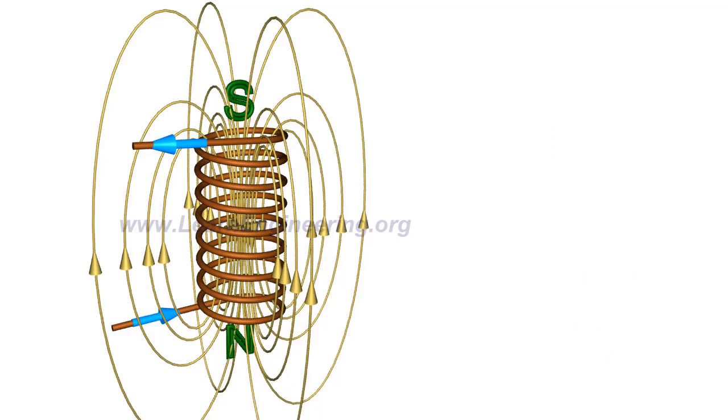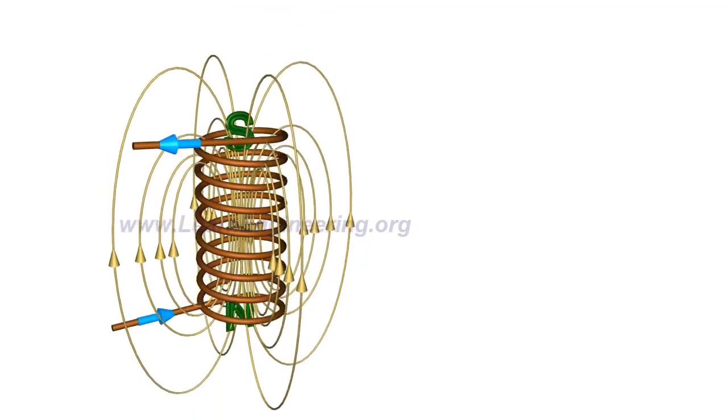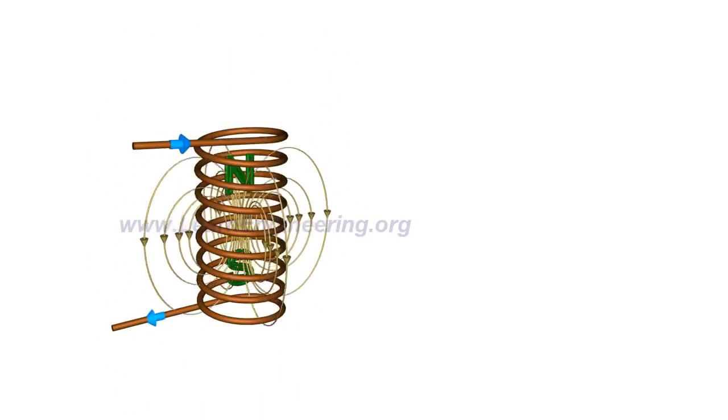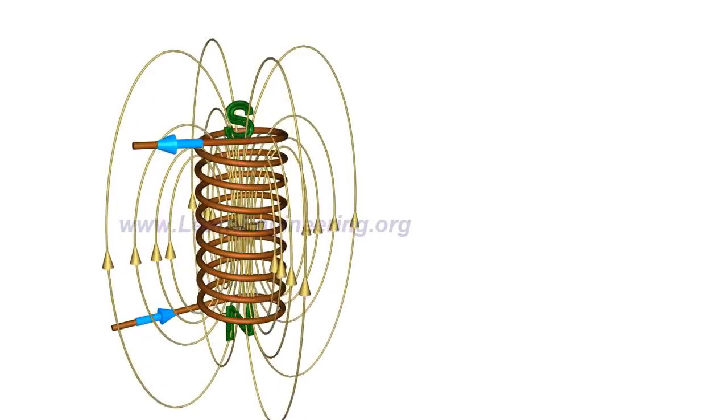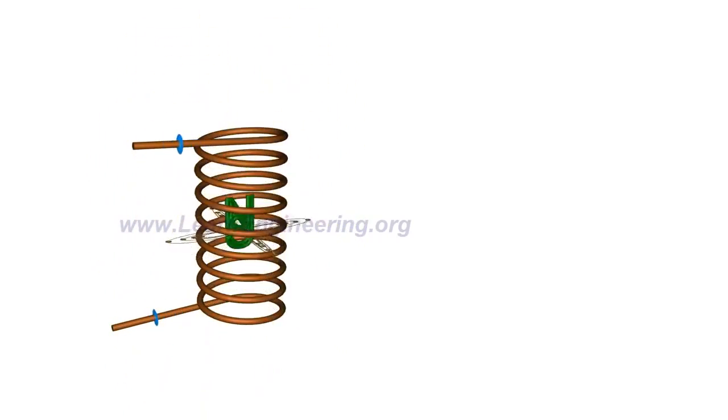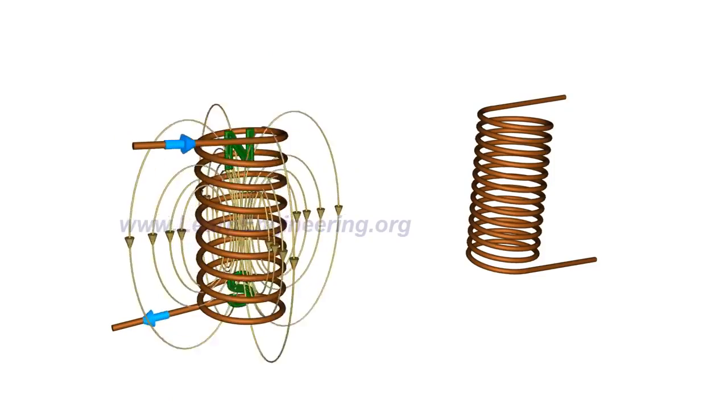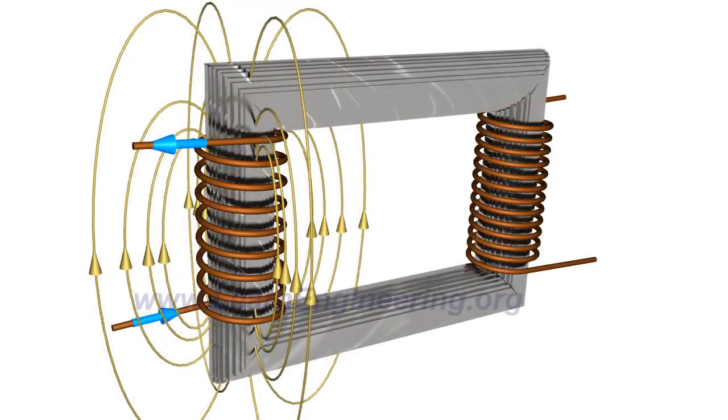With the fluctuating nature of the alternating current, the magnetic field associated with the coil will also fluctuate. This magnetic flux can be effectively linked to a secondary winding with the help of a core made up of ferromagnetic material.